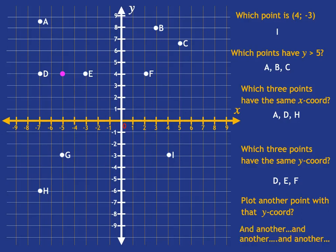And if they ask us to plot another and another and another, well, there's another and another. All of these points, can you see, have a y-coordinate of 4. And in fact, any point that lies on that big pink line will have a y-coordinate of 4.